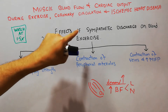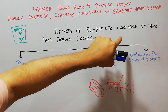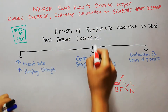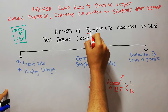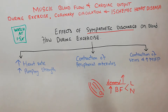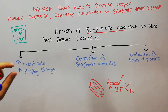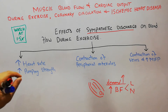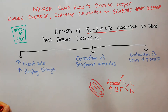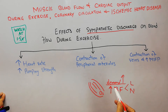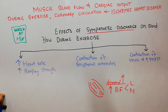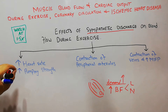Whenever there is activation of the sympathetic system — a sympathetic discharge or mass sympathetic discharge throughout the whole body — there are a few changes that occur which help fulfill the increased demand of the muscles. The most important changes are as follows.